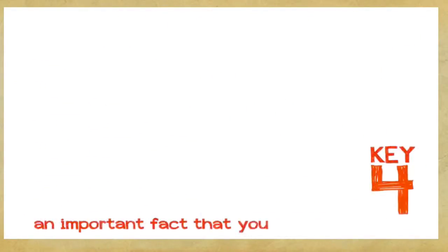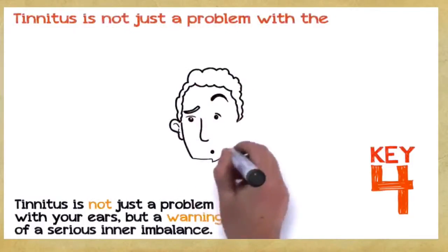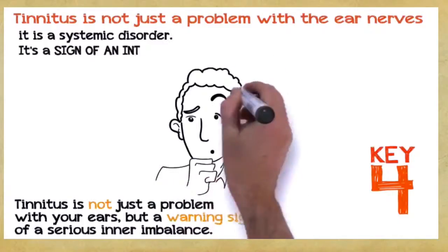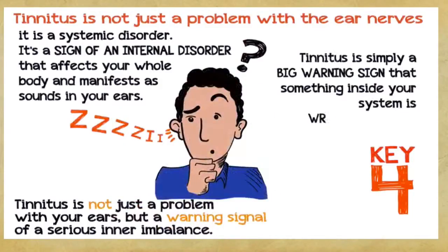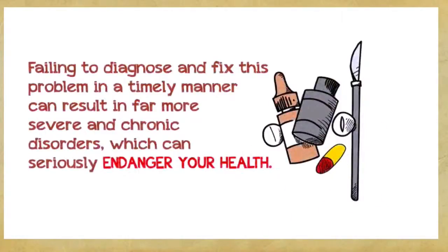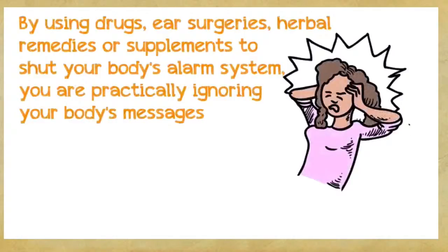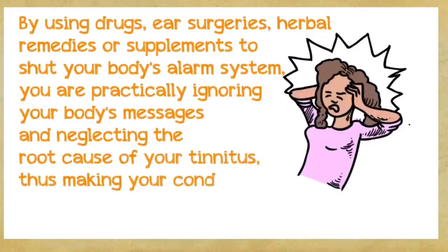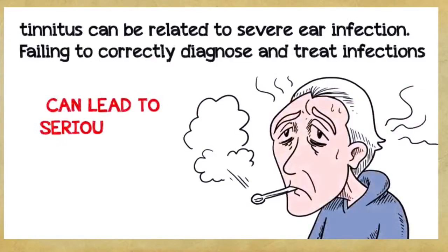Key number four. This is a very important fact that you absolutely must understand if you want to save hundreds or even thousands of dollars. Tinnitus is not just a problem with your ears, but a warning signal of a serious inner imbalance. In the vast majority of cases, tinnitus is not just a problem with the ear nerves, it's a systemic disorder. It's a sign of an internal disorder that affects your whole body and manifests as sounds in your ears. Tinnitus is simply a big warning sign that something inside your system is wrong and needs to be corrected. Failing to diagnose and fix this problem in a timely manner can result in a far more severe and chronic disorder, which can seriously endanger your health. By using drugs, ear surgeries, herbal remedies, or supplements to shut your body's alarm system, you're practically ignoring your body's messages and neglecting the root cause of your tinnitus, thus making your condition worse in the long run. For example, tinnitus can be related to severe ear infection. Failing to correctly diagnose and treat infections can often lead to serious long-term health consequences.